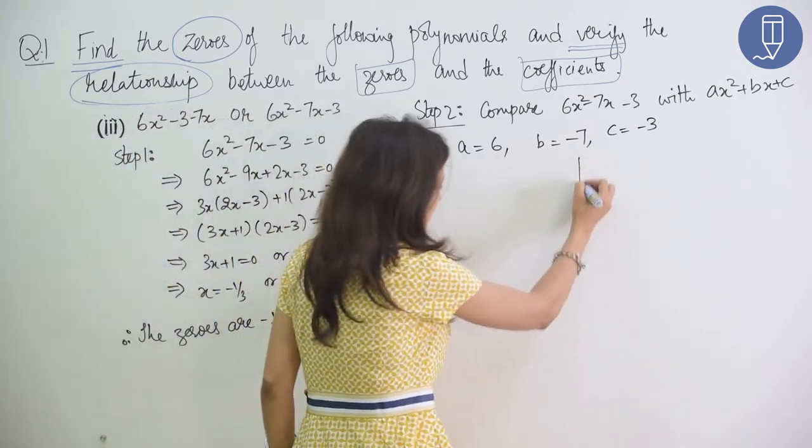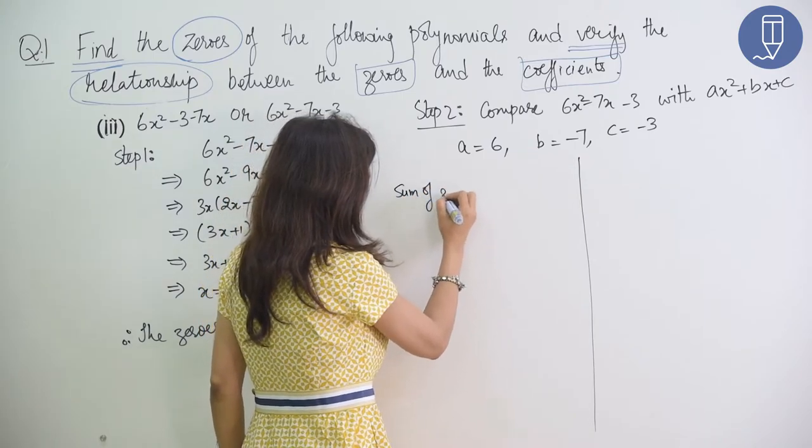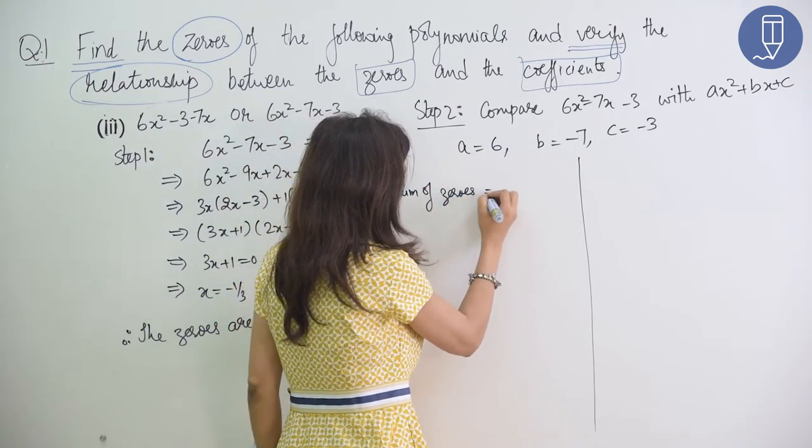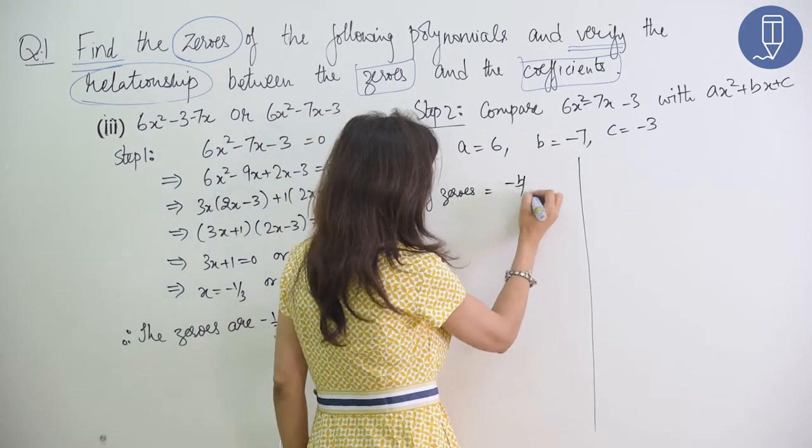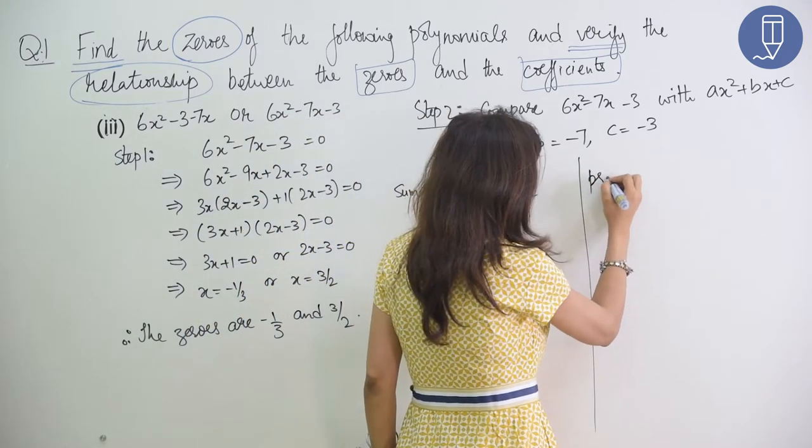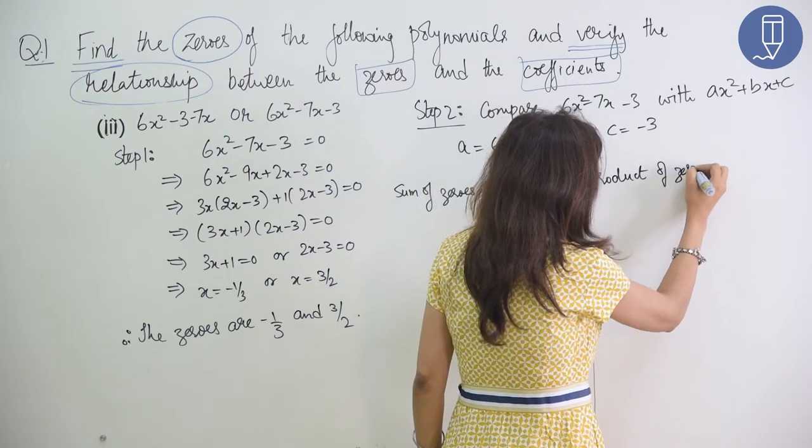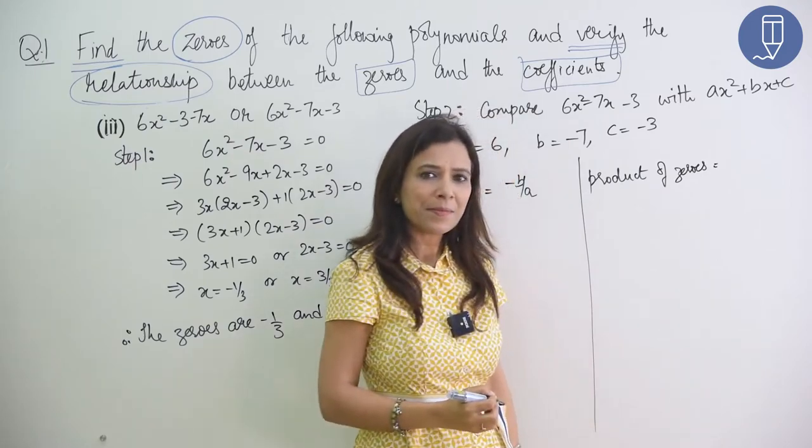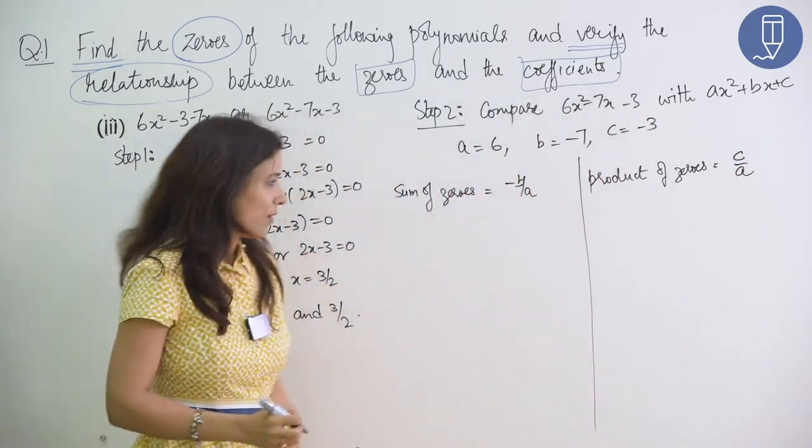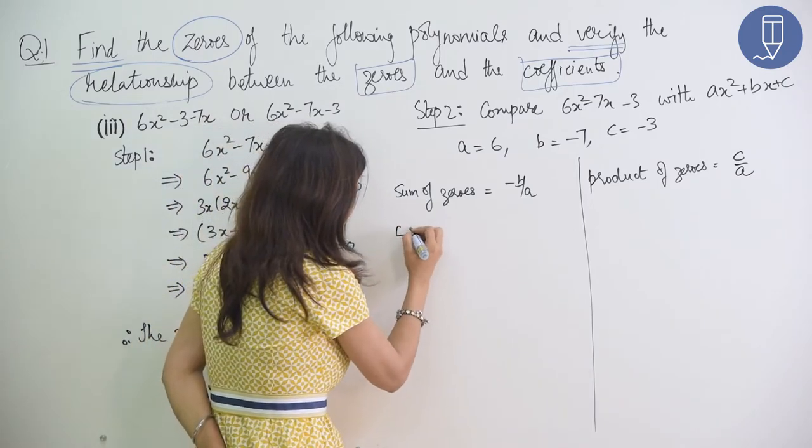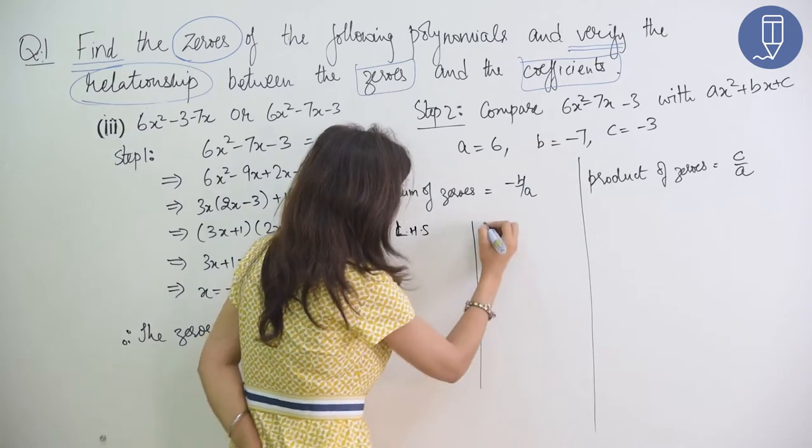Now, what do we have to do? You have to show the relationship. Sum of zeros and product of zeros equal to? Yes. Minus b by a. Product of zeros equal to? C by a. Very good. Alright. So, left hand side. Right hand side.